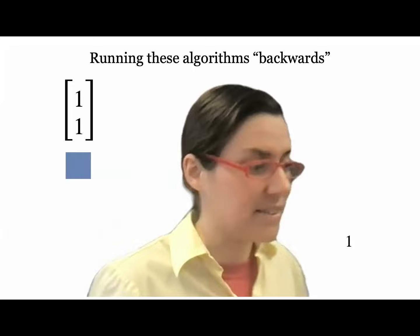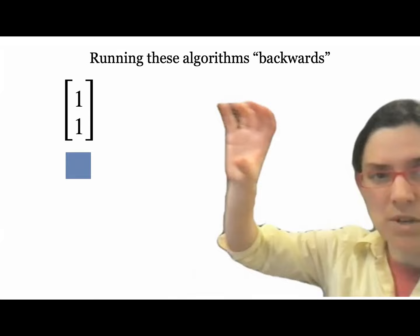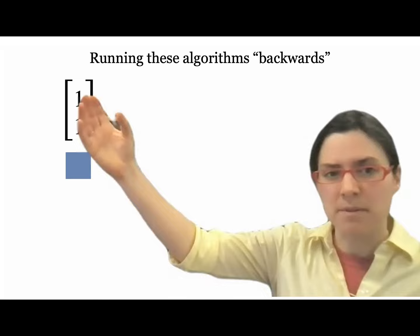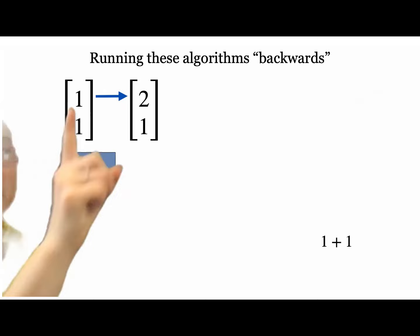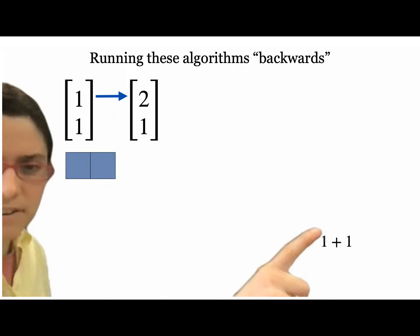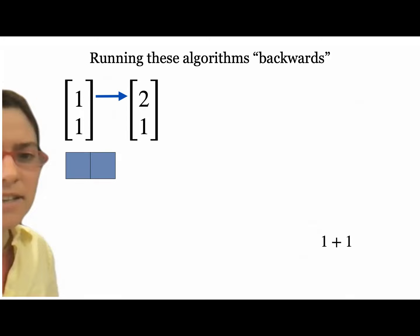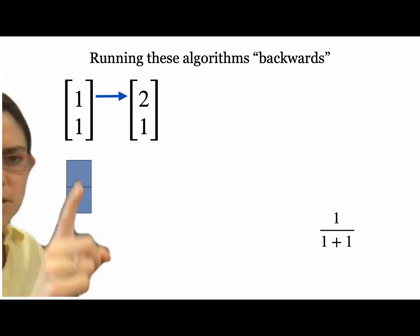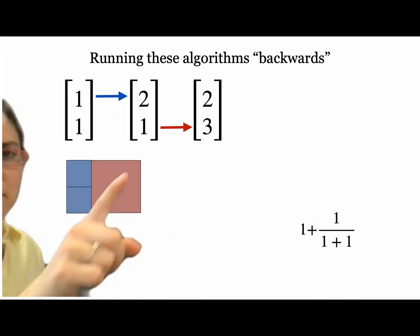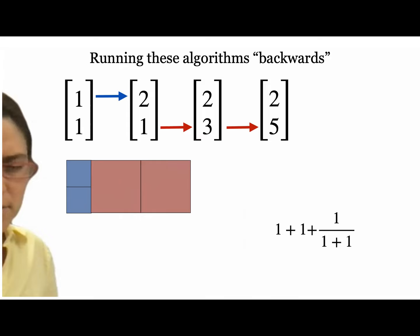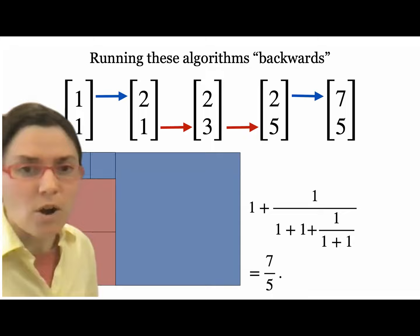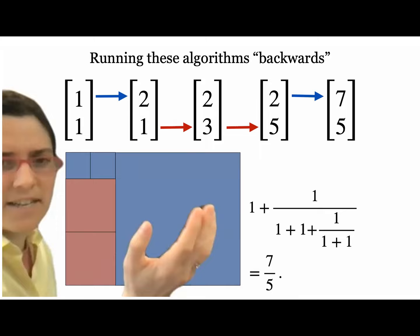We can run these algorithms backwards as a generative thing, starting with the simplest thing and generating more and more complicated objects. Start with vector (1,1) or a basic square, add squares, keep track of the counts. When we switch direction, we add in that direction and flip our fraction. In all cases — the Euclidean algorithm, continued fractions, and vectors — we get to 7/5 and an aspect ratio of 7/5. It's all the same idea.